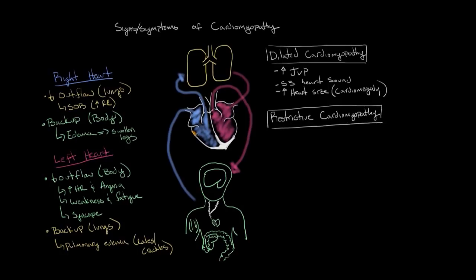In restrictive cardiomyopathy, the walls or heart muscle get really stiff and scarred down. When these walls are really stiff, they're not able to dilate, so not enough blood is able to enter the ventricles. Even though the heart muscle is still pumping, there's a decreased volume coming out of the heart because the chambers can't accommodate as much fluid, resulting in the same decreased outflow and backup of blood from the heart.